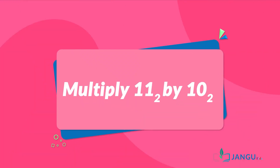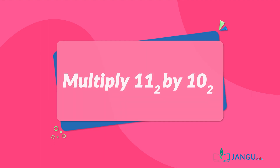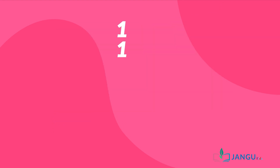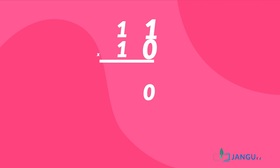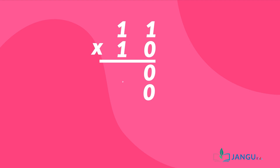Let us look at some examples. Multiply 11 in base 2 by 10 in base 2. We'll first write down the numbers one below another according to their place value. Then we multiply the rightmost digit of the multiplier — zero — by the multiplicand, which is 11. Zero times one is zero, zero times one is zero.